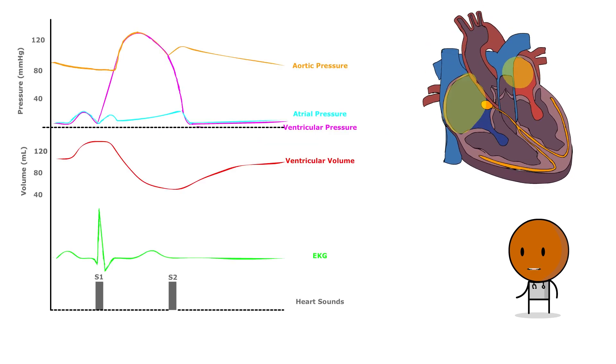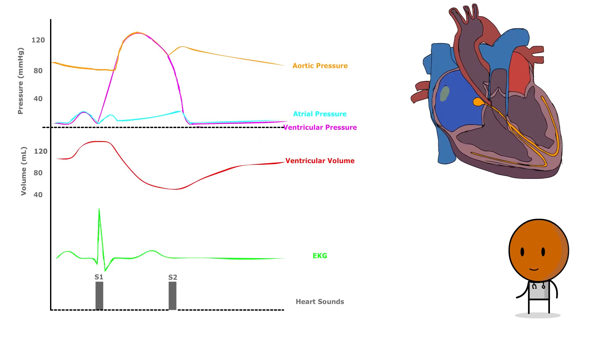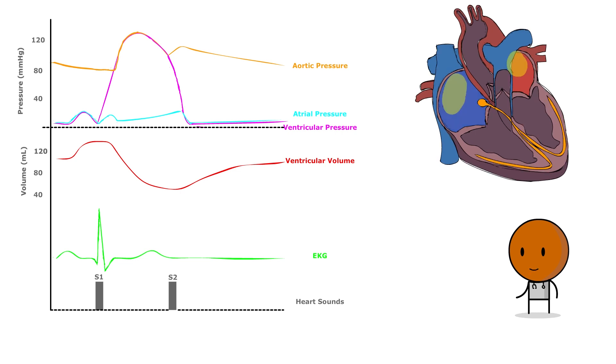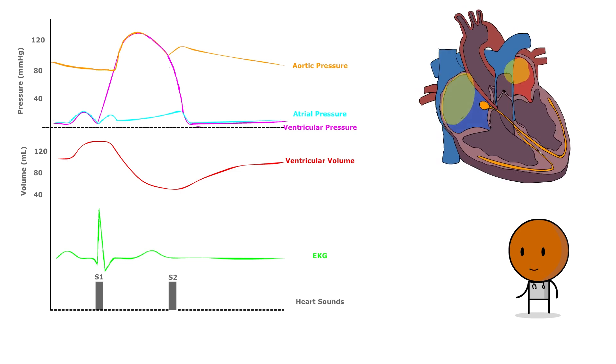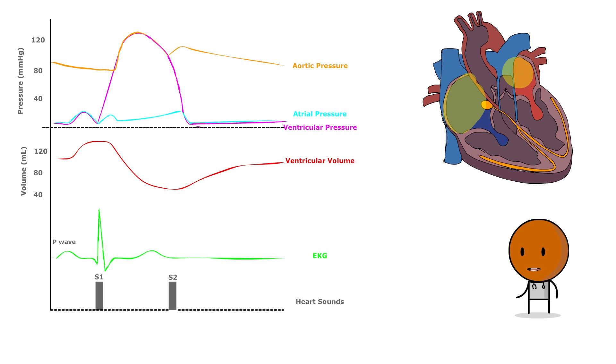The cardiac cycle process begins with the SA node triggers, prompting the atria to undergo depolarization, depicted by the EKG P-wave. The subsequent contraction of the atria elevates their internal pressure, propelling blood into the ventricles.